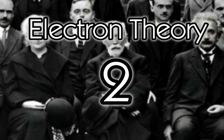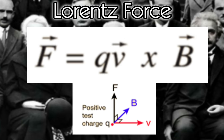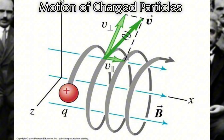Two, electron theory. Lorentz's work primarily focused on how electrons behave when subjected to electric and magnetic fields. He developed the Lorentz force law, which describes the forces acting on a charged particle, such as an electron, when it moves through electric and magnetic fields. This law is fundamental in classical electromagnetism and provides a mathematical description of the motion of charged particles.